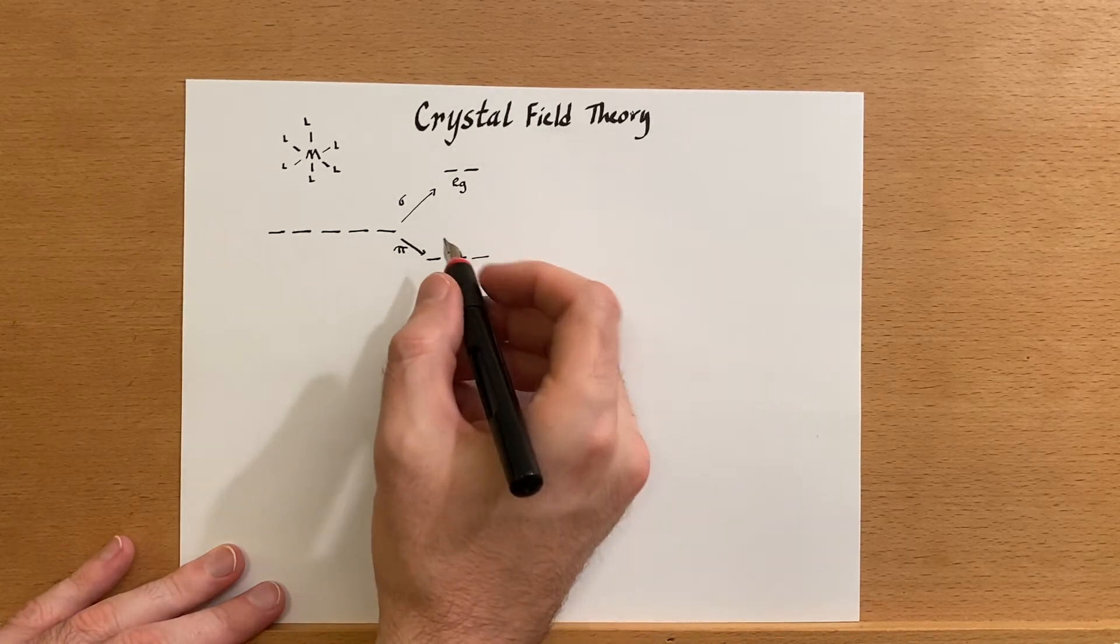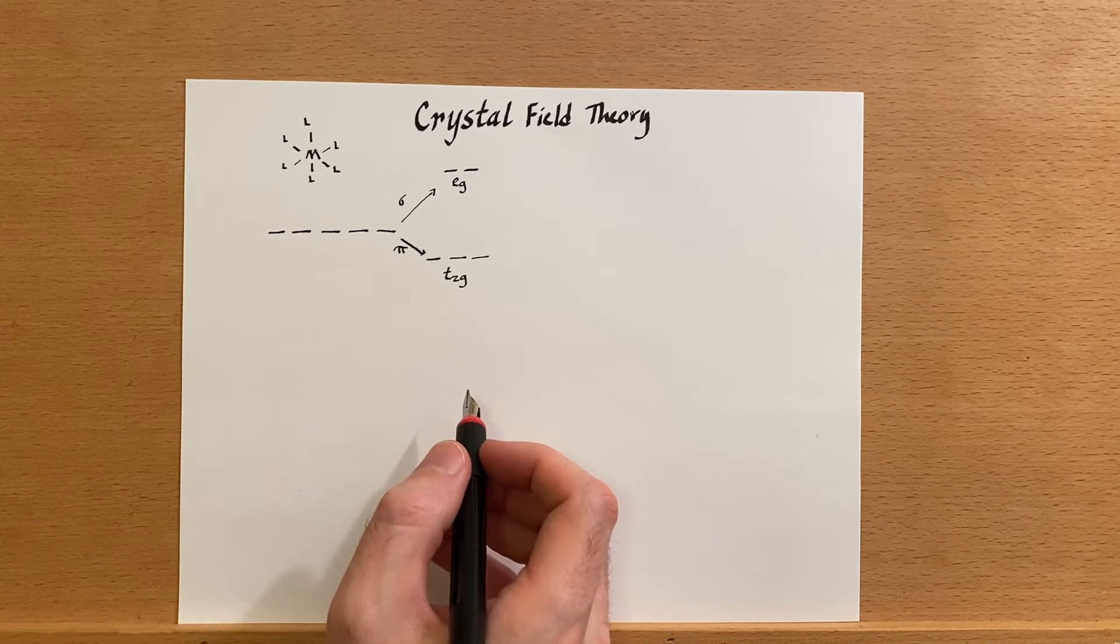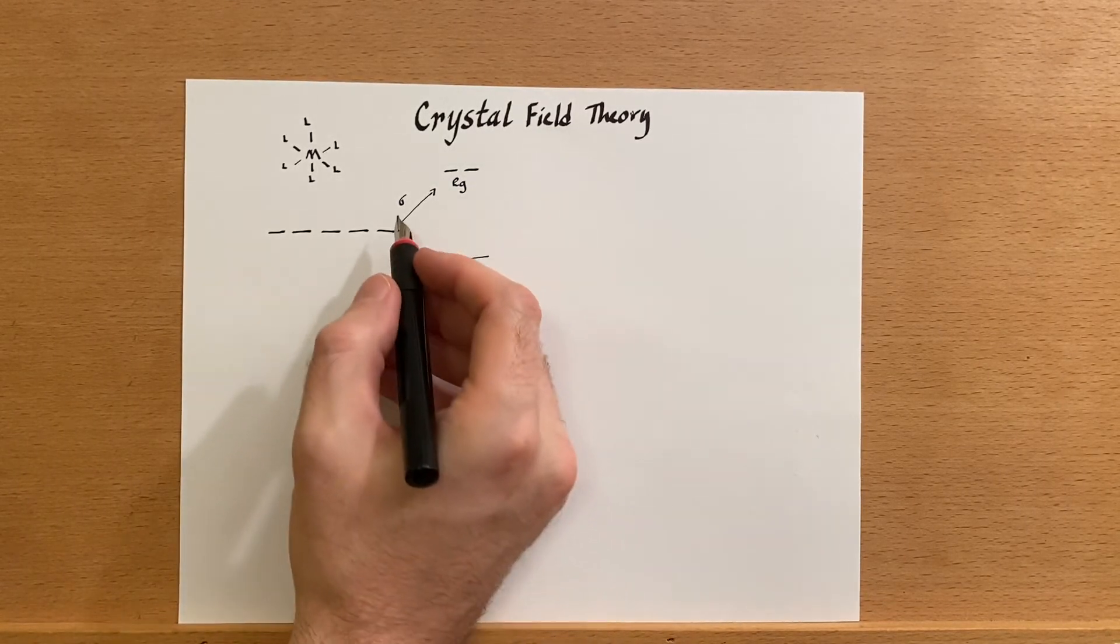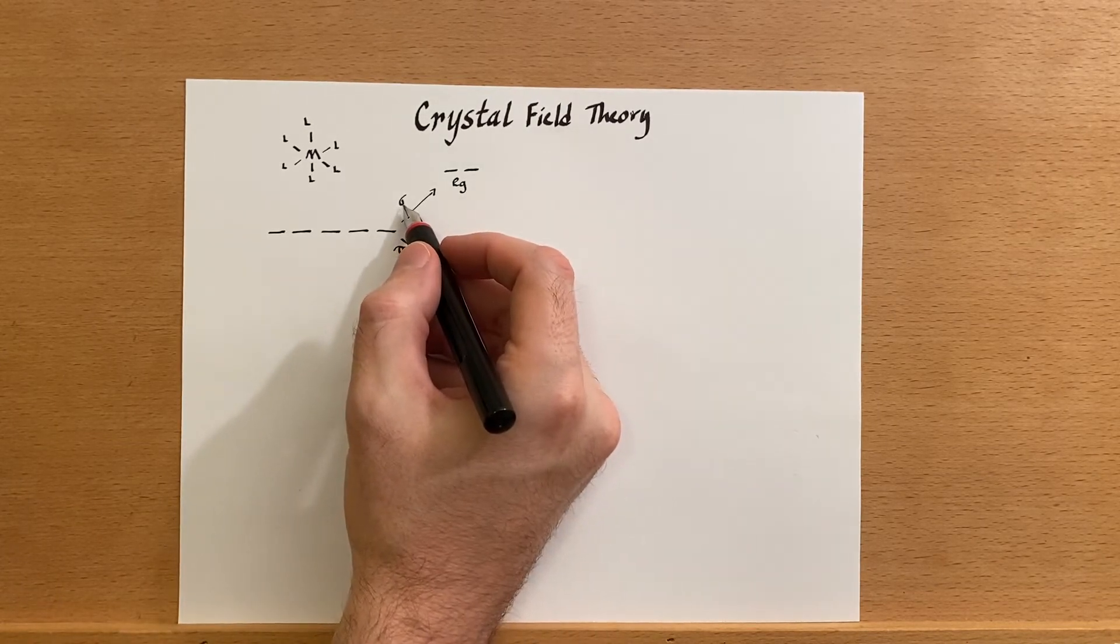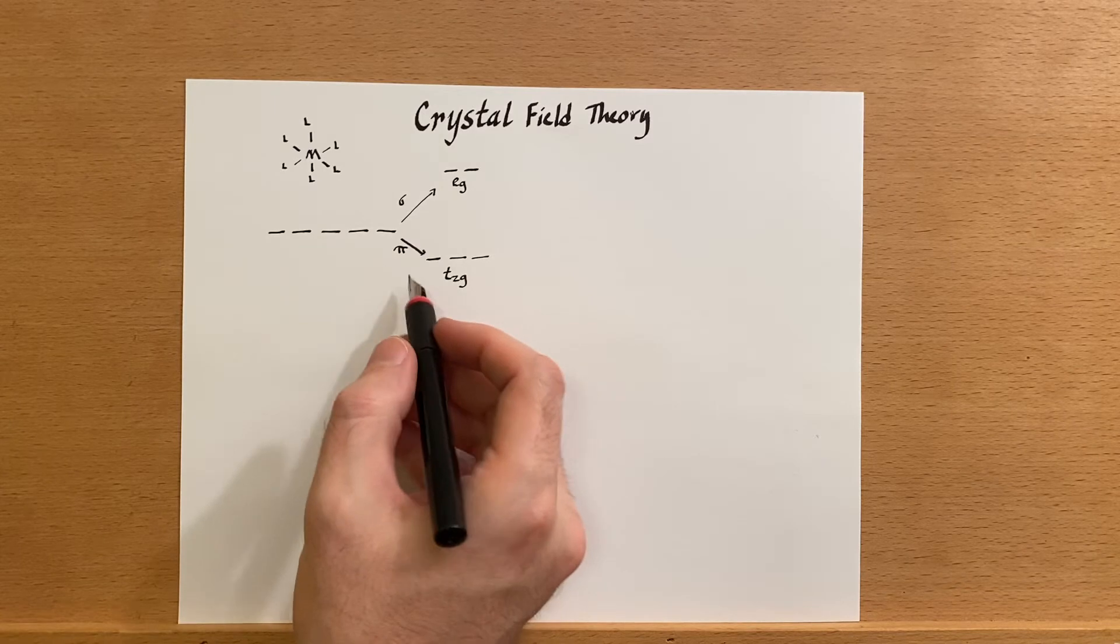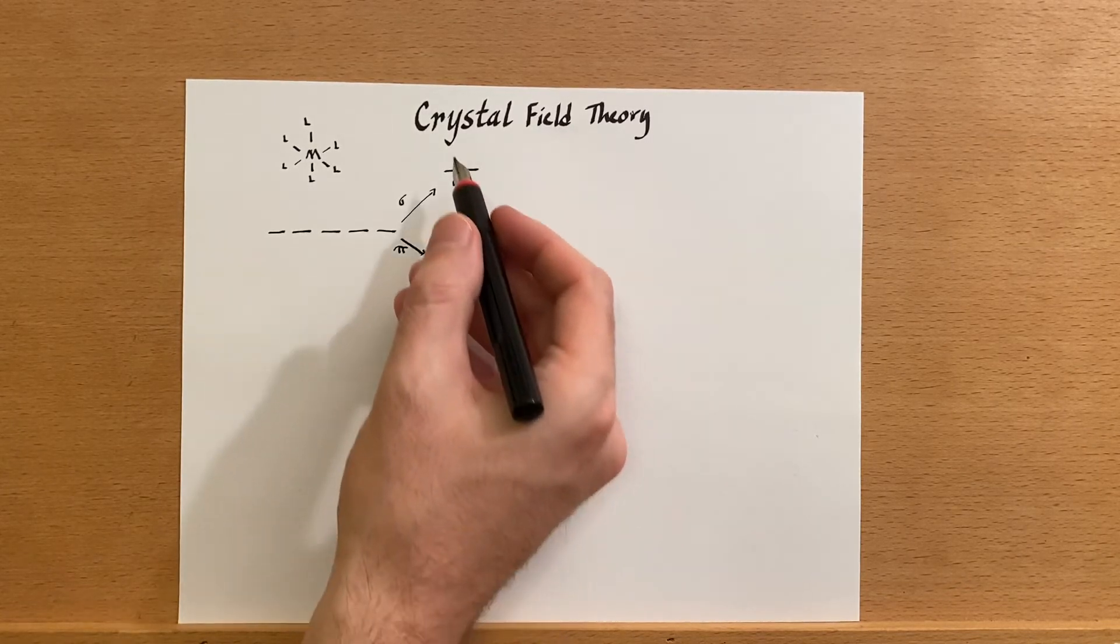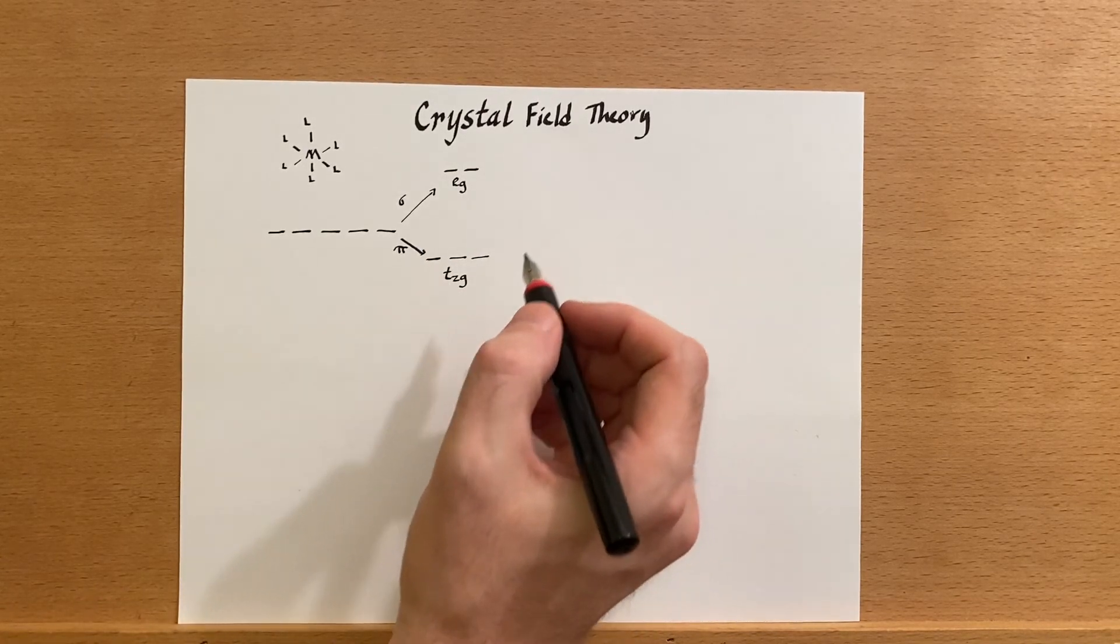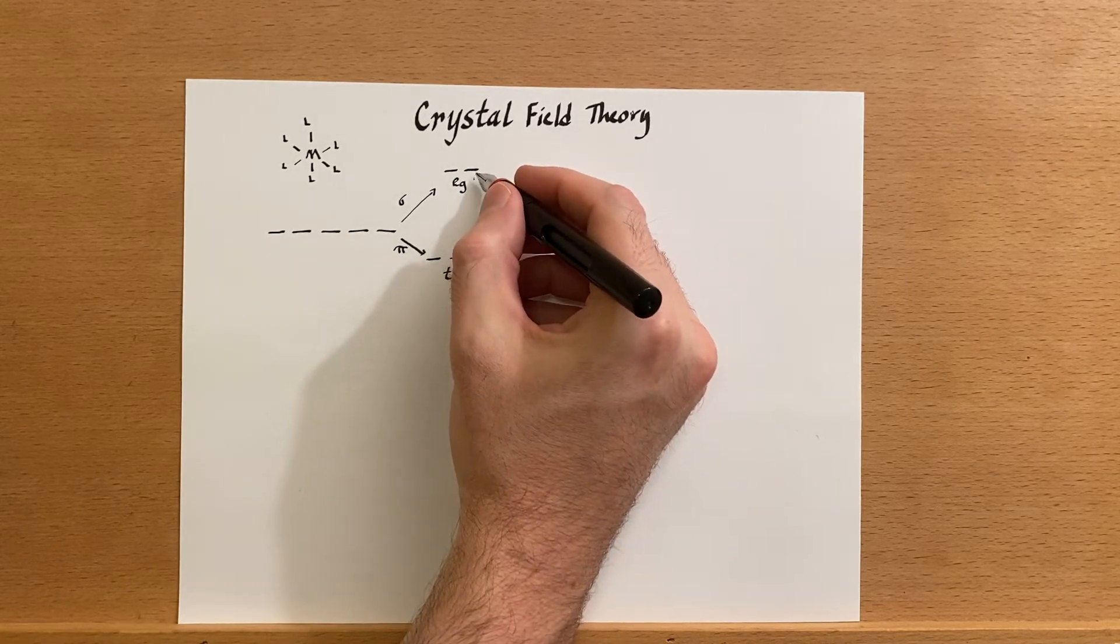The important thing to realize here is that if we have a strong sigma donation and we have some pi acceptance going on, this gap can be made even bigger, right? And the size of that gap we call it the delta octahedral.